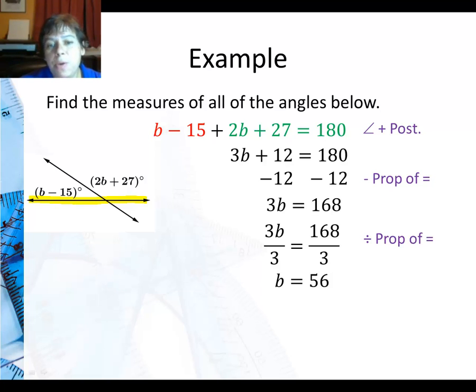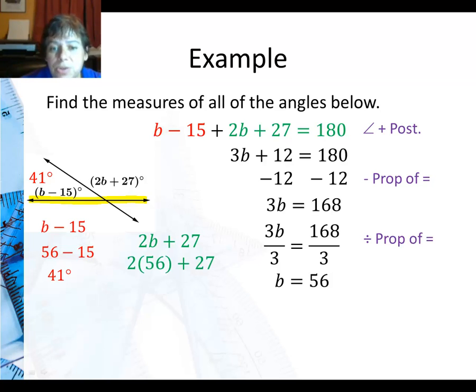Now I can go back and find the angles. b minus 15, well I substitute in 56 minus 15 that gives me 41 degrees. And 2b plus 27 I substitute in 56, two 56's plus 27 or 112 plus 27 which is 139 degrees.